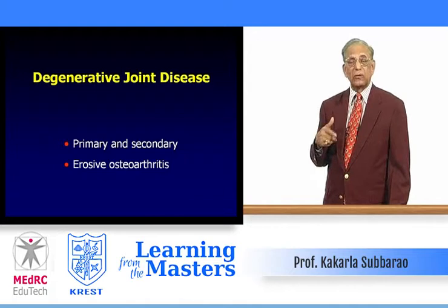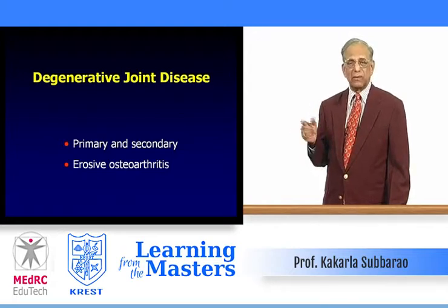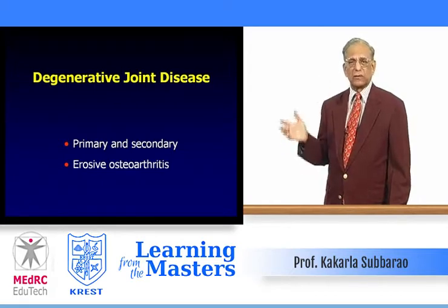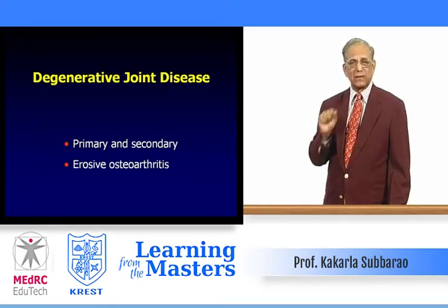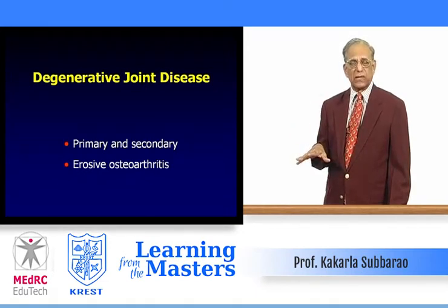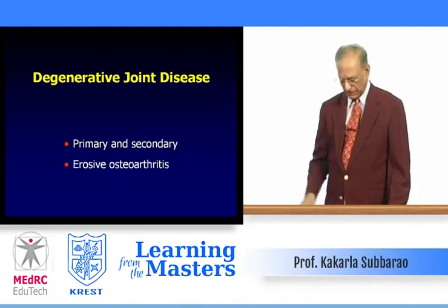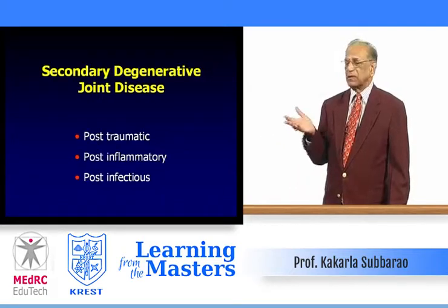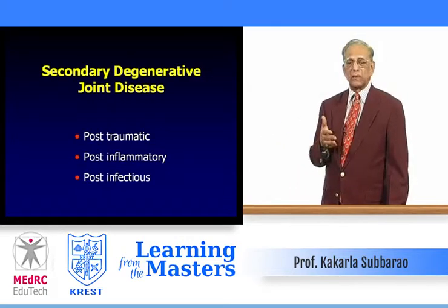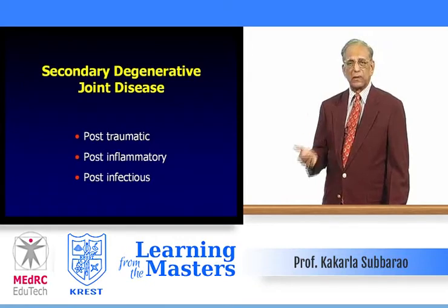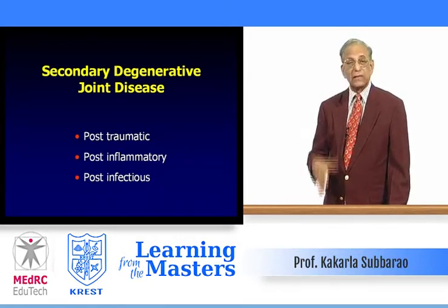Primary inflammatory erosive osteoarthritis occurs generally in post-menopausal women and runs in families. It commonly involves the distal interphalangeal joints of the hands, sometimes the proximal interphalangeal joints, and occasionally the knee and cervical spine. Secondary degenerative joint changes may be post-traumatic, post-inflammatory, or post-infectious — for example, treated rheumatoid arthritis may eventually progress to degenerative arthritis.